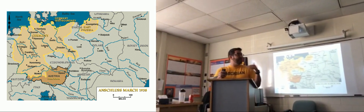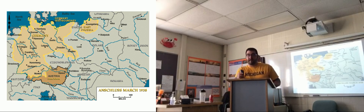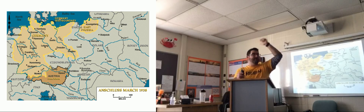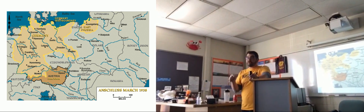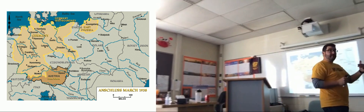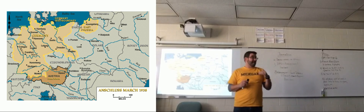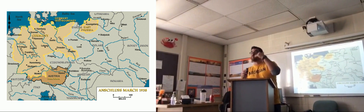But the next few years changed the balance of power between Italy and Germany. Germany was rebuilding their military in violation of the Treaty of Versailles, but no one was doing anything about it. Italy got involved in two very costly wars — first in Ethiopia, then in Spain. Italy sent more soldiers into the Spanish Civil War than any other foreign nation, while Germany sent only its Air Force and came out largely unscathed. So by 1938, the balance of power between Germany and Italy had shifted.